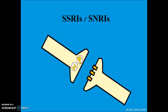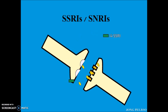Selective serotonin reuptake inhibitors and serotonin and norepinephrine reuptake inhibitors have a similar mechanism of action, which is blocking the reuptake of monoamines, so more monoamines stay in the synapse and allow further transmission. The difference between SSRI and SNRI is that SNRI non-selectively inhibits the reuptake of both norepinephrine and serotonin.